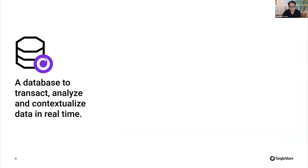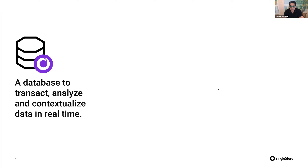SingleStore is a database. If you're familiar with MySQL, it's very similar — in fact, it is MySQL wire protocol compatible. It was initially known as MemSQL. You can store row-based data in memory, and over time, depending on use, that data can also be stored in columnar format, both on disk and in S3 object storage. Because it's a three-tiered storage layer with compute separate from storage, you can do three things: transactions, analysis such as aggregations and averages, and you can use SingleStore to curate and contextualize data for your LLMs all in split seconds.